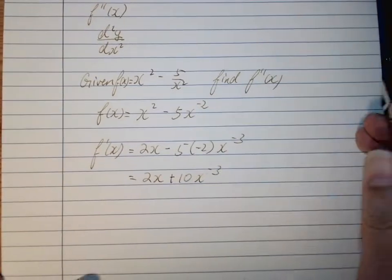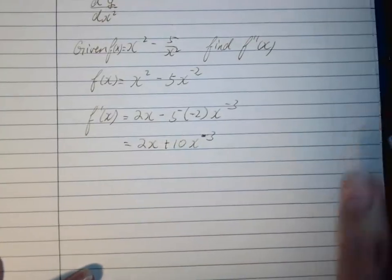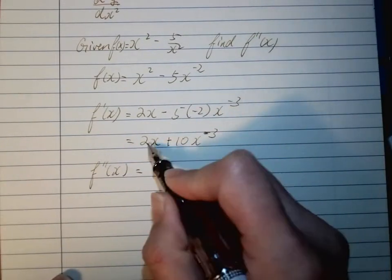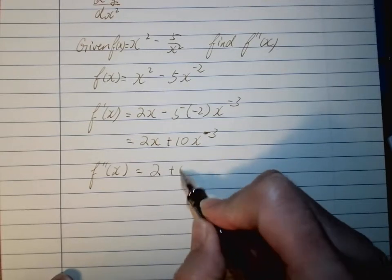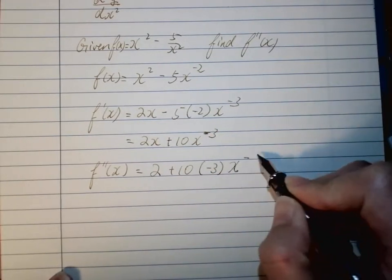Then we can differentiate a second time to go with what the question required. f''(x) becomes 2 + 10(-3)x^(-4), which is 2 - 30x^(-4).